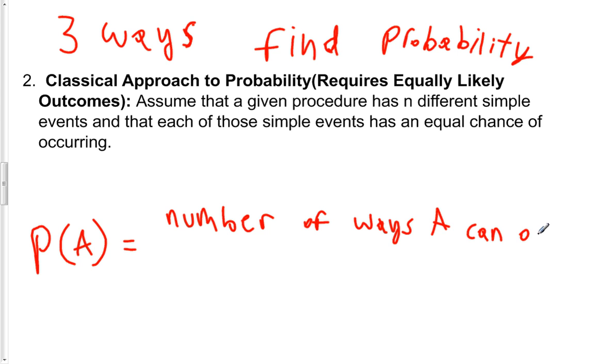So this requires a lot of knowledge of the situation. You have to know how many ways the particular event can occur. And you're going to divide that by the number of different simple events.